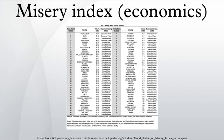The misery index is an economic indicator created by economist Arthur Okun, and found by adding the unemployment rate to the inflation rate. It is assumed that both a higher rate of unemployment and a worsening of inflation create economic and social costs for a country.